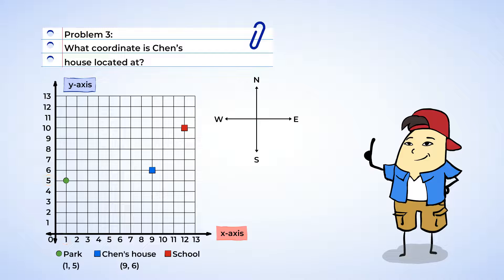But is the park or the school located farther east? We can take a look at the compass to see what direction east is. East is on the right side. So is the park or the school farther to the right on the x-axis? The park has an x-coordinate of 1 and the school has an x-coordinate of 12. So the school is farther east than the park.